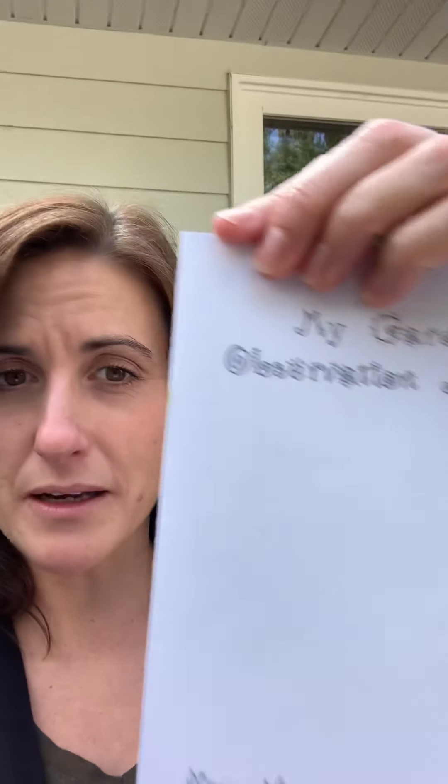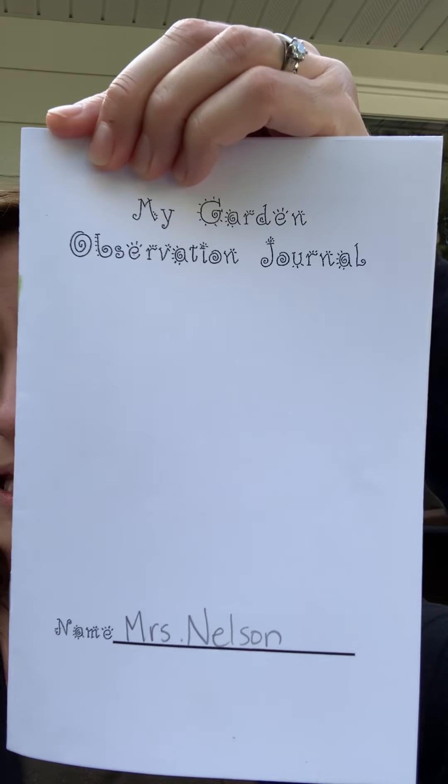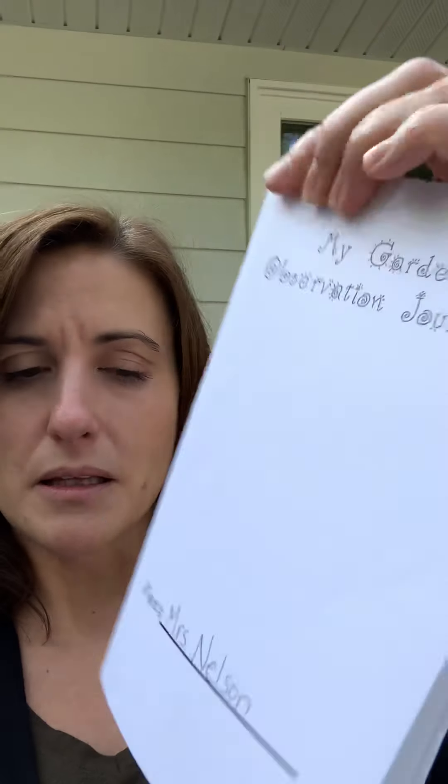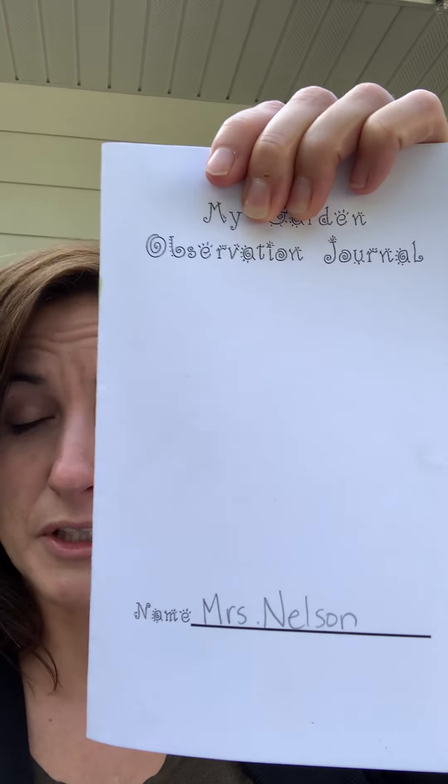Hi third graders! Today for science we are going to be using your garden observation journal that is in the packet that you picked up from school. It looks like this and it is a little booklet for us to make observations outside throughout the rest of the school year. So when you get the observation journal out, put your name on the front cover.